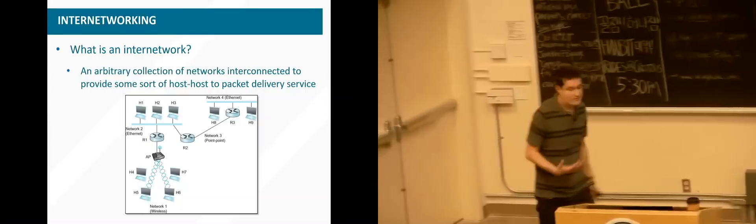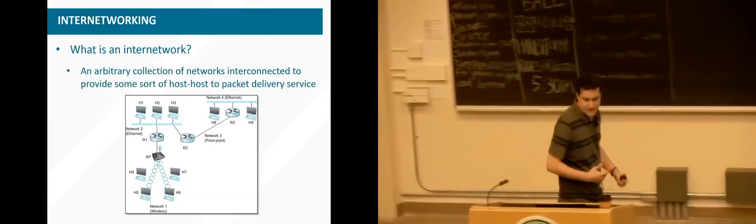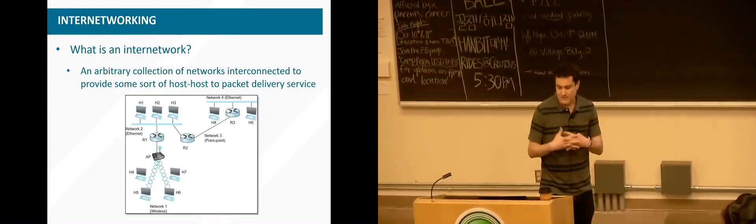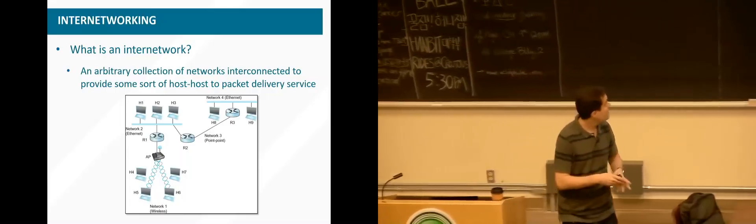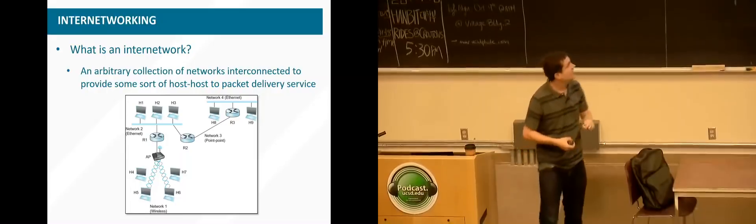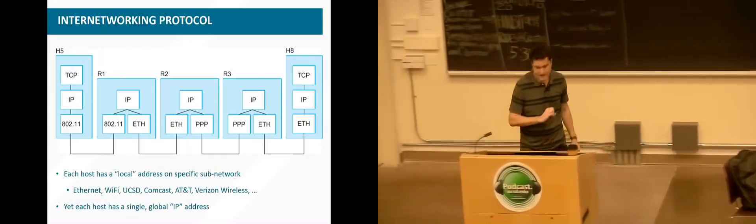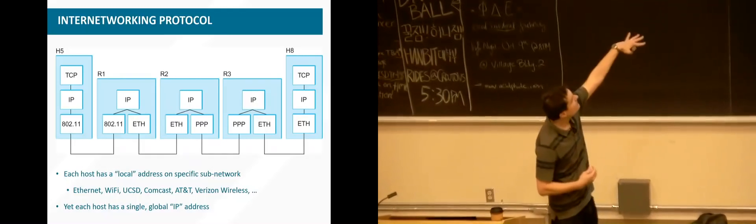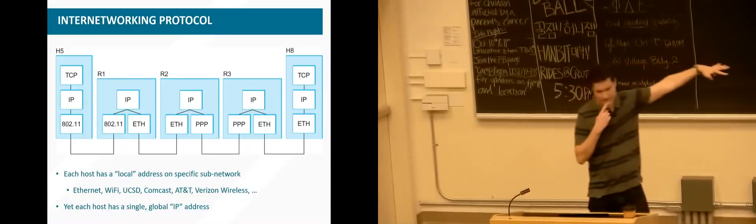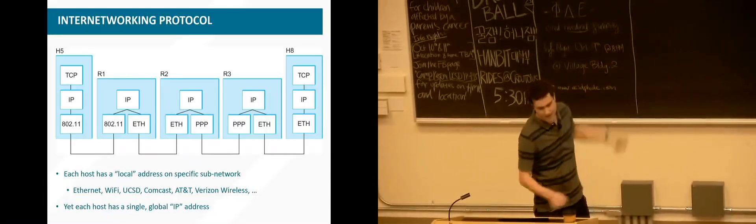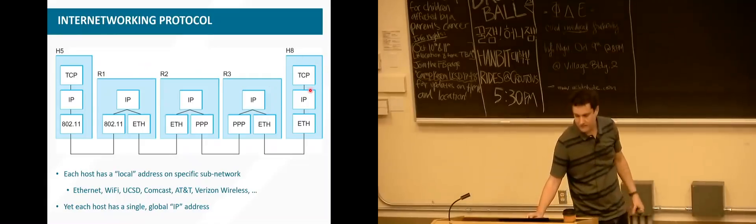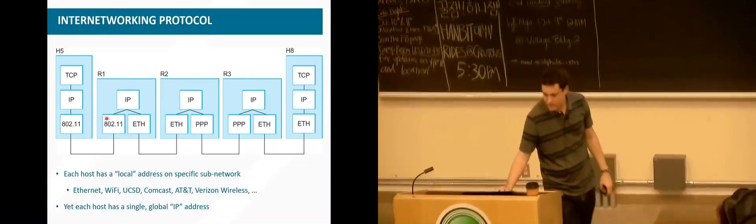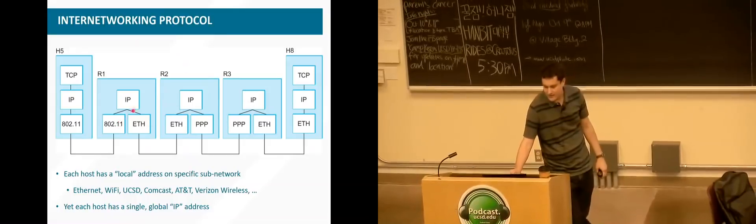Just as a review, an inter-network or the internet is an arbitrary collection of networks designed to provide some kind of packet delivery service. The idea is we're going to interconnect different networks and pass data from one network to the other to get it to the ultimate destination. If we look at a diagram from the Peterson and Davey book, we've got a host on the left, a host on the right — a host is another word for server or computer — and three networks in between, with some routers along the path.